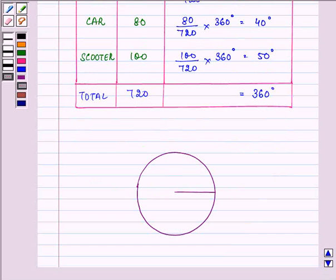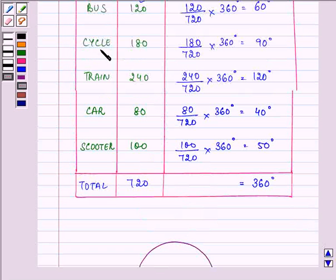Now let us first draw the 90 degree angle. Let it be like this. And 90 degree angle, and 90 degree is representing cycle.